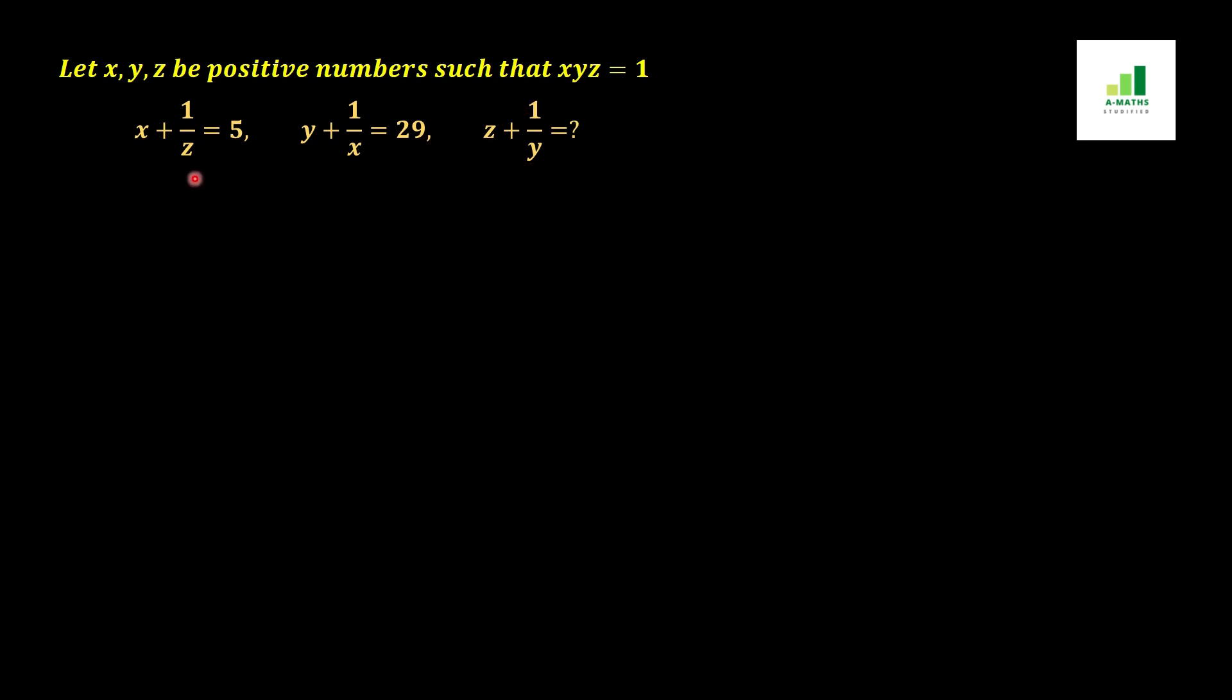In order to solve this question, first we multiply these values. When we multiply these two brackets, we will get xy + 1 + y/z + 1/xz, and then x + 1/y is same as before.